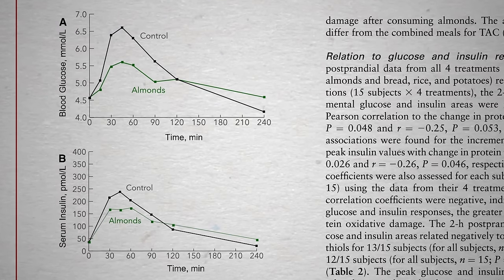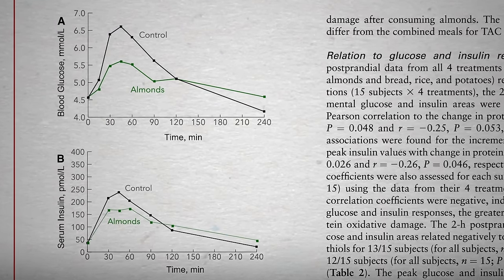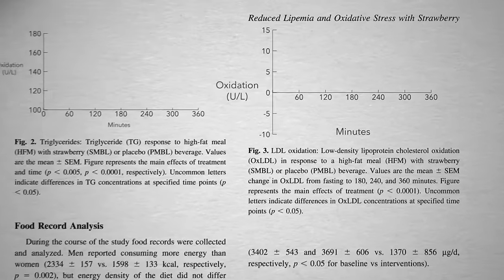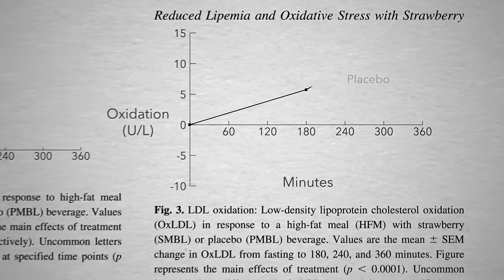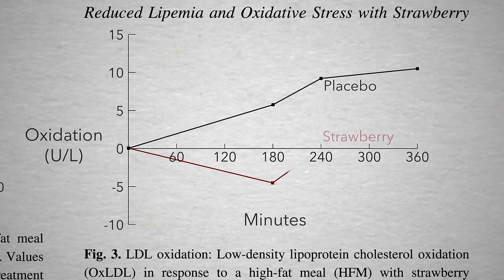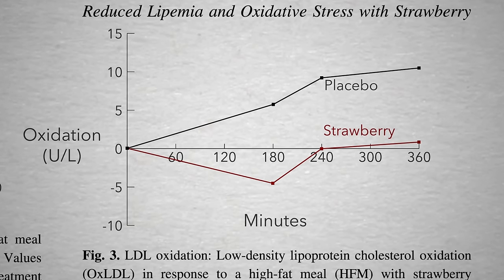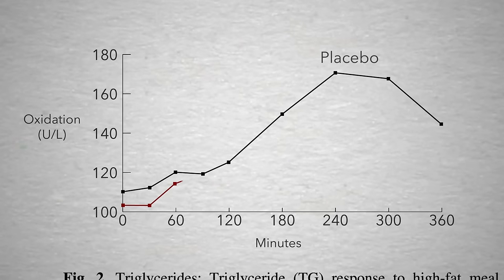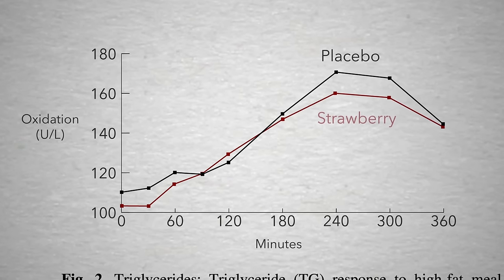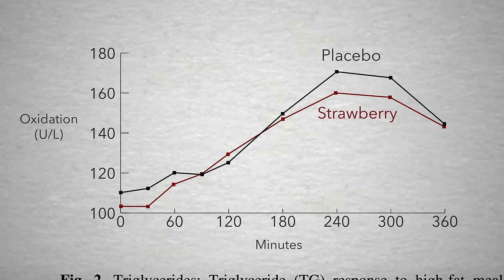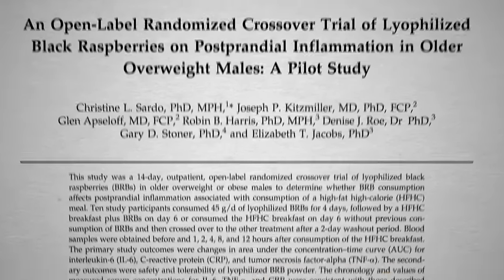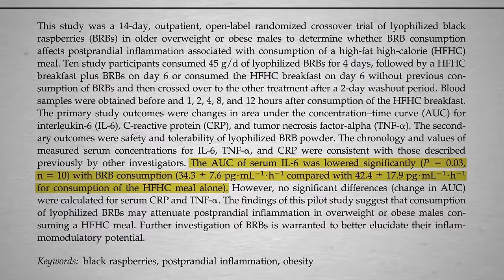What if instead you smeared on an all-fruit strawberry jam? Berries have even more antioxidants than nuts and can indeed squelch the oxidation of cholesterol in response to a typical American breakfast, and even reduce the amount of fat in your blood after the meal. With less oxidation, there is less inflammation when berries are added to a meal.